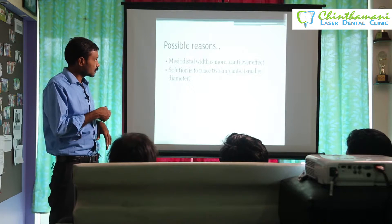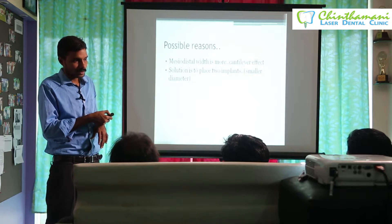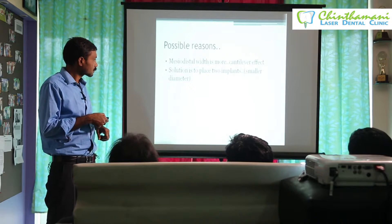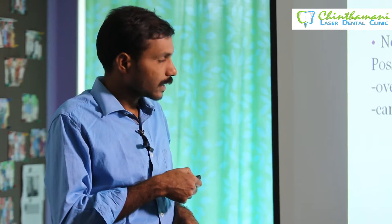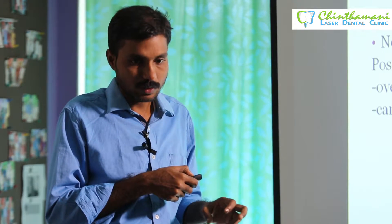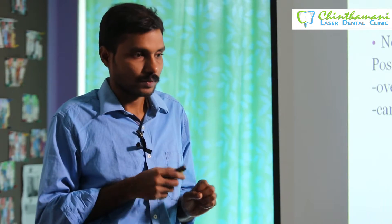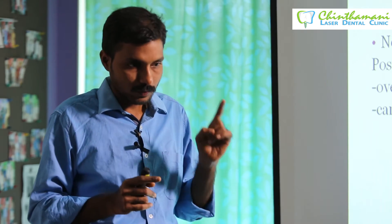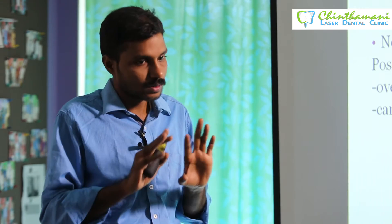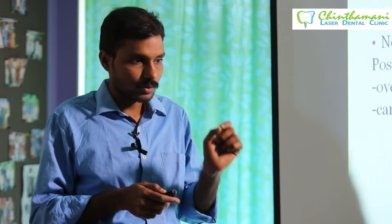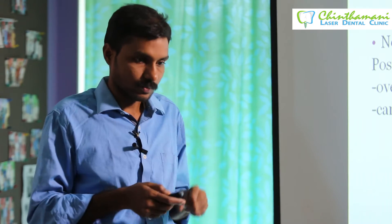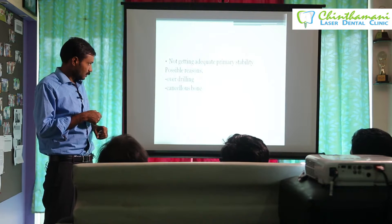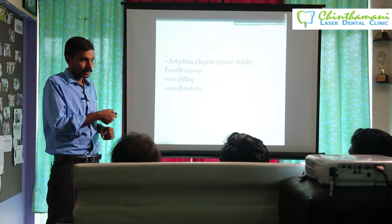Some practical reasons: if the mesiodistal width is more, there will be a cantilever effect. You can avoid this by placing a bigger single implant or two narrow-diameter implants. Not achieving adequate primary stability is another reason — if stability is only 20–30 Newton for a single implant, that is not ideal. If placing multiple implants and two of four have 20 Newton stability it may be acceptable, but for a single implant good stability is the first criterion. Over-drilling, where the osteotomy size becomes too large, is one reason for not achieving primary stability.